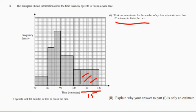Now we need to look at this piece of information down here. Seven cyclists took 80 minutes or less to finish the race. Seven. And that's 10.